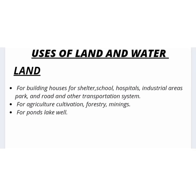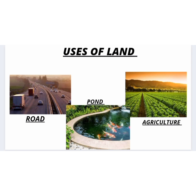Now we will see the uses of land and water. Land is used in many ways: for building houses for shelter, schools, hospitals, industrial areas, parks, roads and other transportation systems. Land is also used for agriculture, cultivation, forestry, mining, and for ponds, lakes and wells.